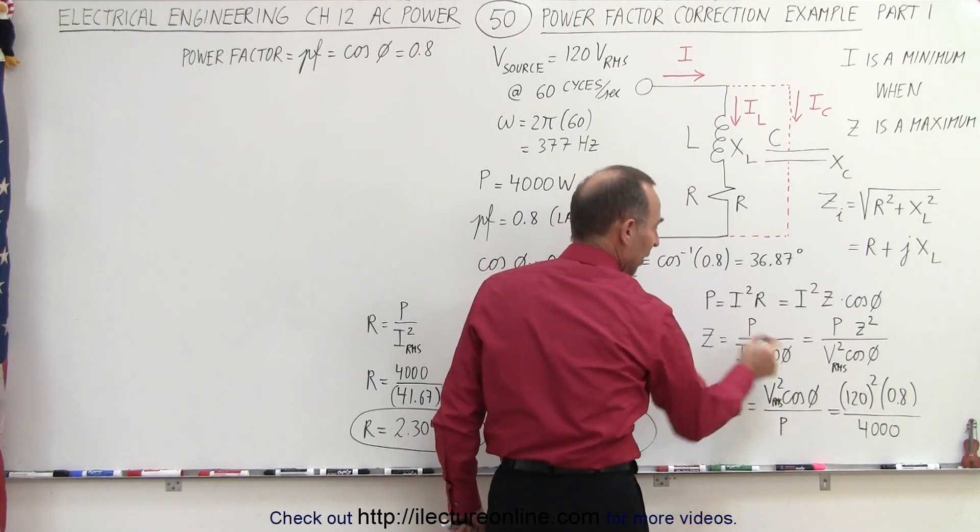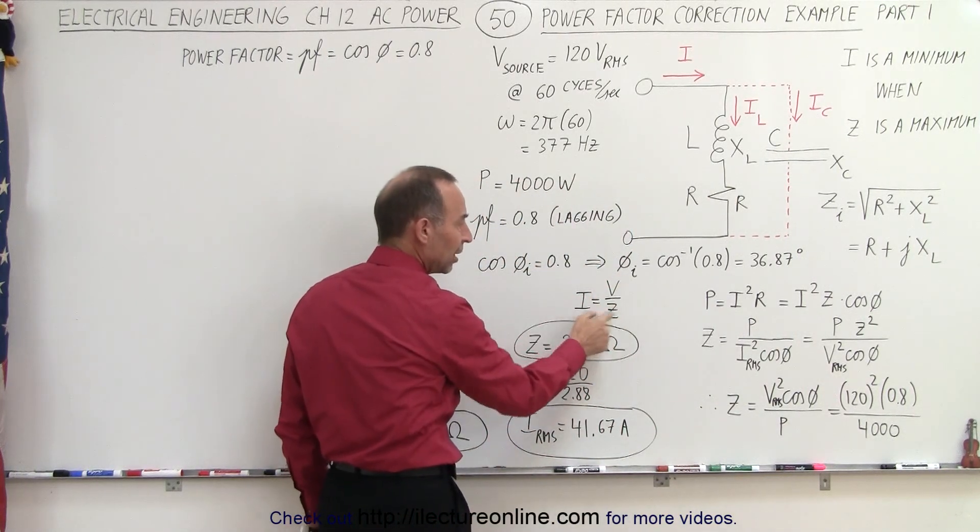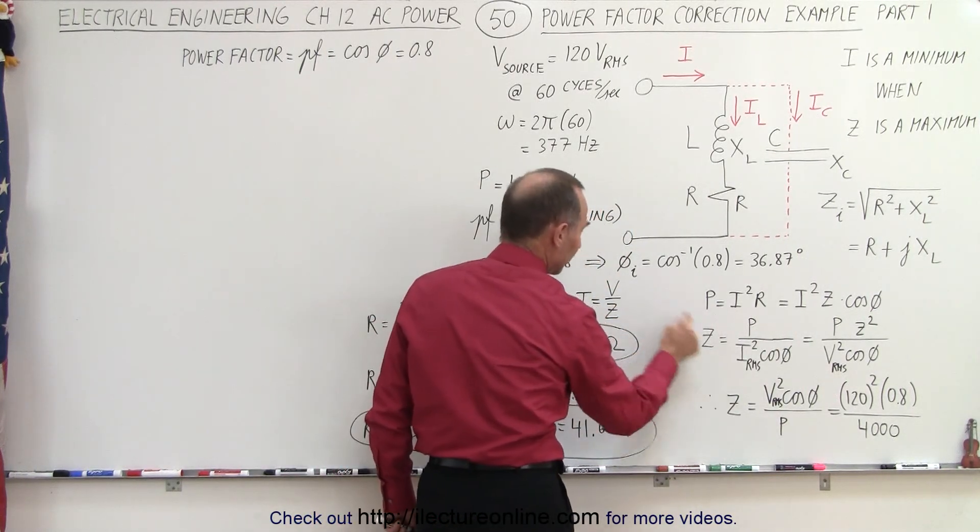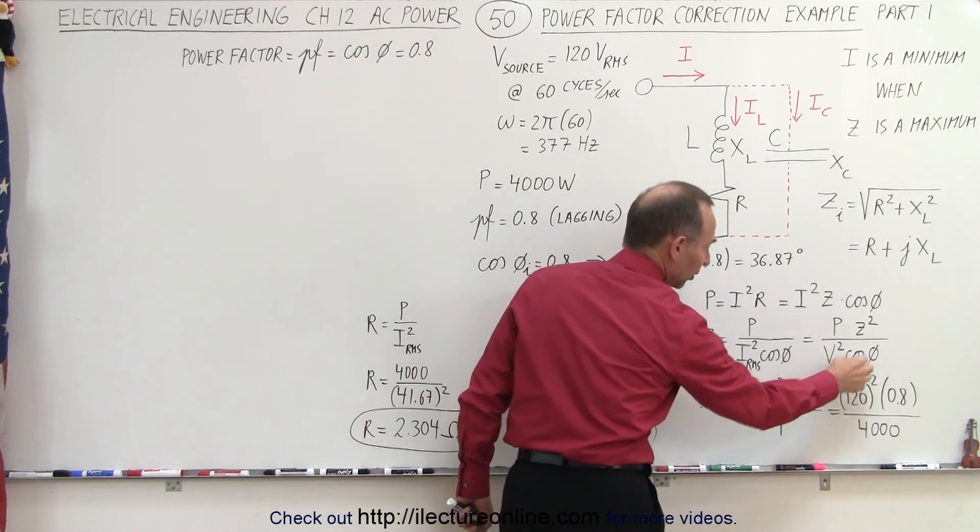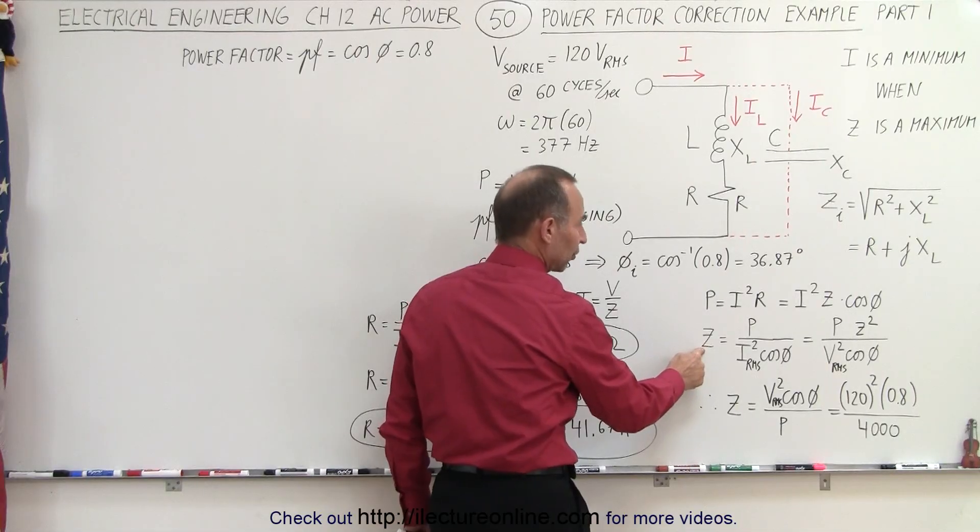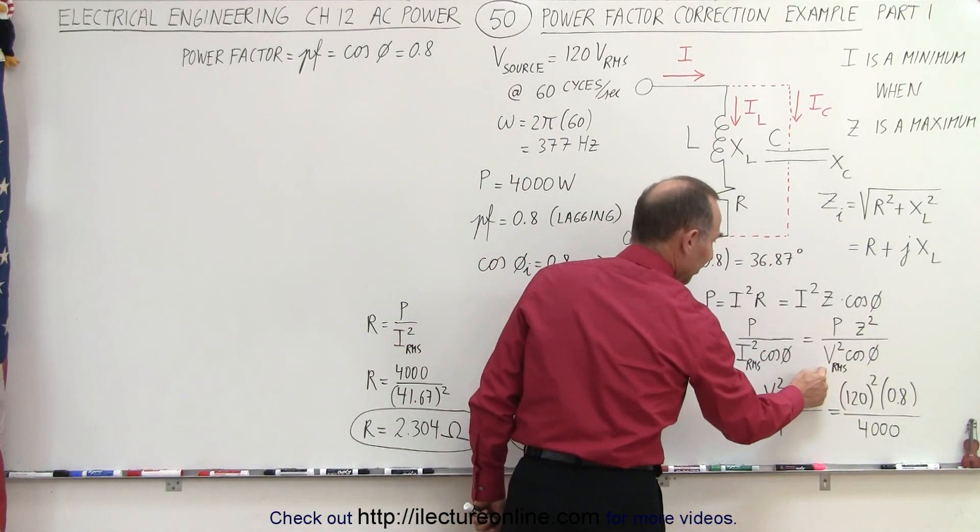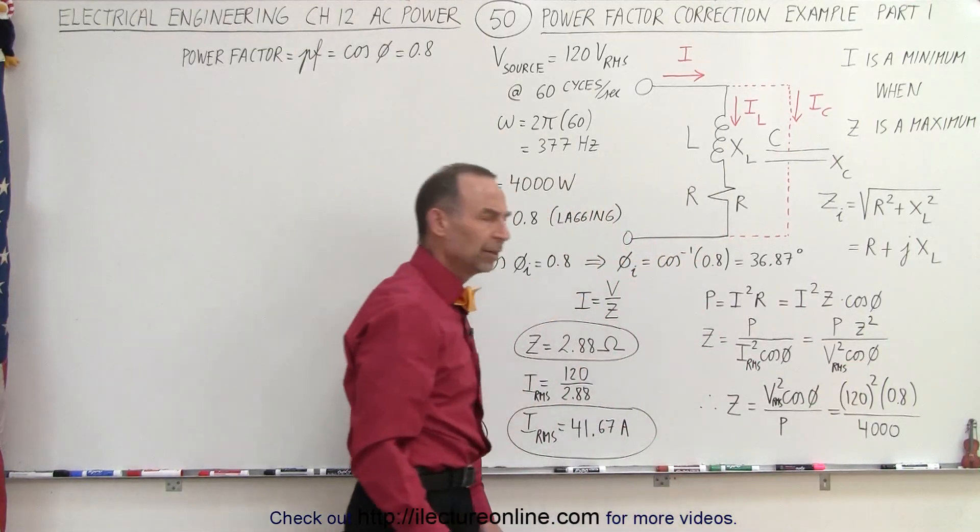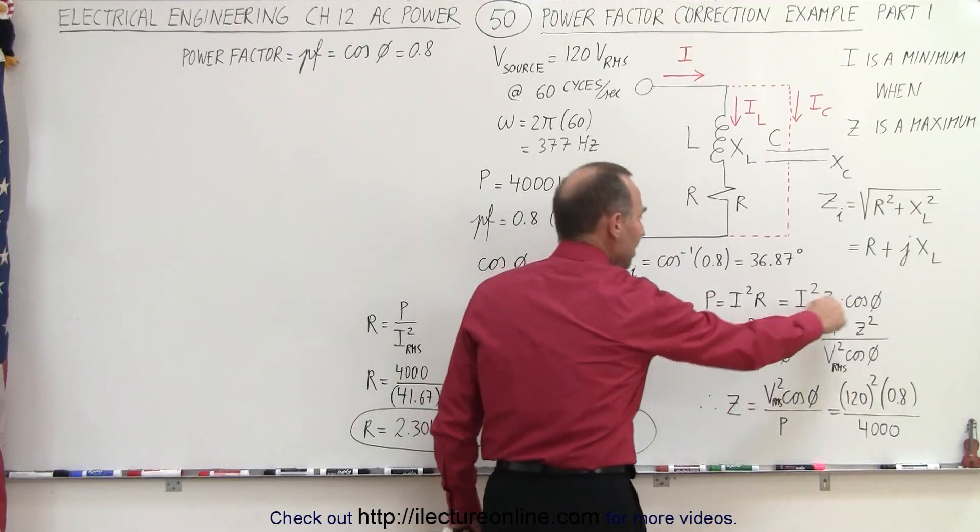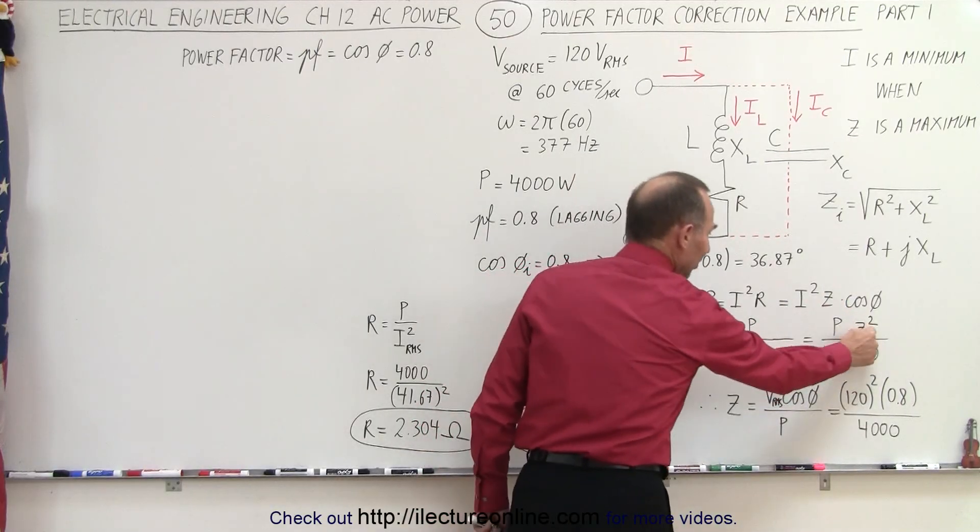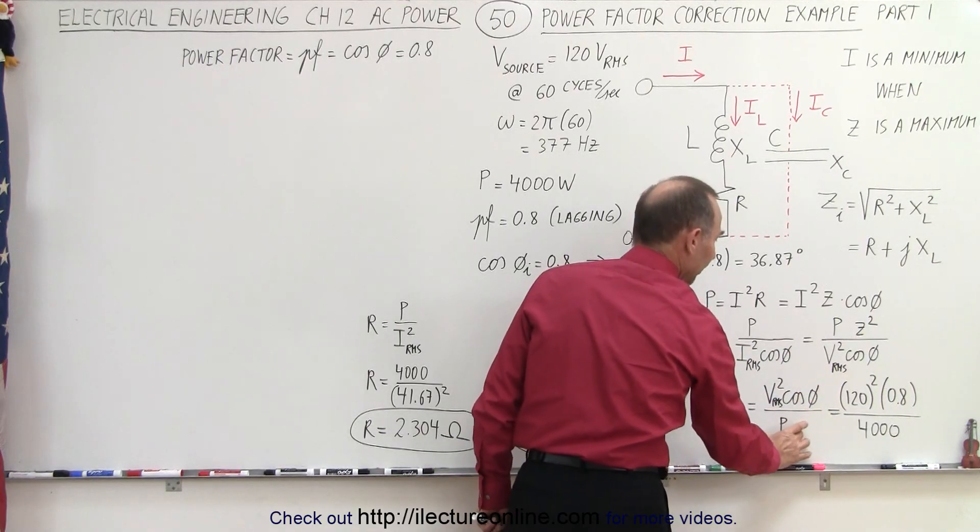And then realizing that the current is V over Z, we can replace I squared by V squared over Z squared. So we have V squared over Z squared, we can put the Z squared over there. So the impedance in the circuit is going to be the power times Z squared divided by V squared times the cosine of phi. Well, since we're looking for impedance, we can divide both sides by Z. That gives us one on one side and Z on the other side, so therefore Z will be equal to V squared cosine of phi divided by the power.